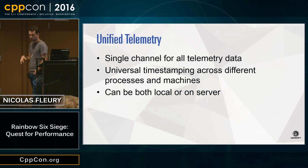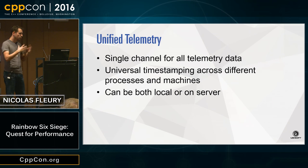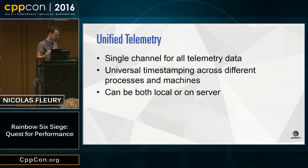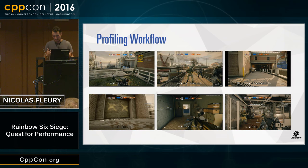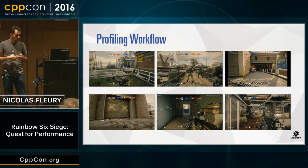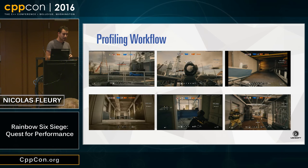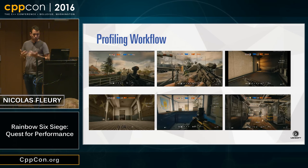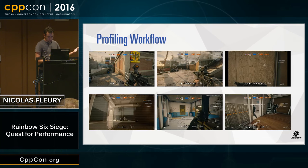One of the core systems used on Rainbow Six Siege in production to make a 60 FPS game is a unified telemetry system. The concept is to have a single channel for all telemetry data from different systems, using timestamps that are universal — not only across systems but across different processes and machines as well. We can log telemetry data on the server or locally as needed. The point is that when people are playing our game and there's a performance issue, we want to be able to fix it without having to reproduce the issue. A programmer can navigate through different sessions and players and see if there's been any abnormal frame rate.